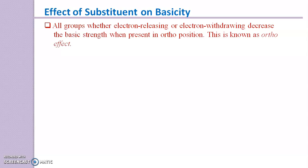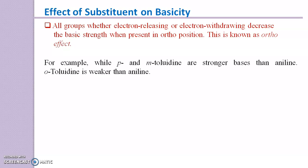An important point to remember: all groups, whether electron-releasing or electron-withdrawing, decrease basicity when present in the ortho-position. This is known as the ortho-effect. For example, while para-Toluidine and meta-Toluidine are stronger bases than aniline, ortho-Toluidine is weaker than aniline.